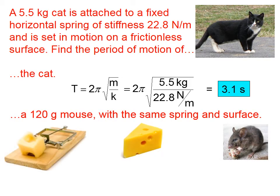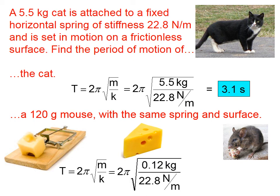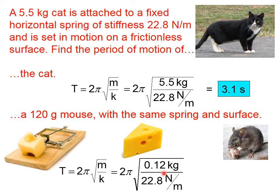Suppose we detach the cat and put a mouse in its place. Same spring, same frictionless surface. Everything is the same in this calculation, with the exception of the mass. And we note here that the mass must be in kilograms. We can't have the unit grams in our equation. So be careful of that. Perhaps it isn't surprising that the mouse will take much less time to go over and come back, because its mass is so much less.